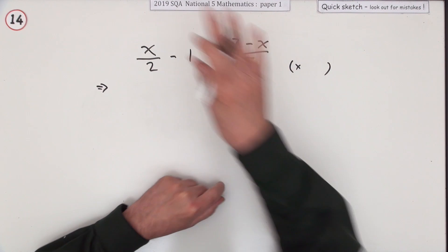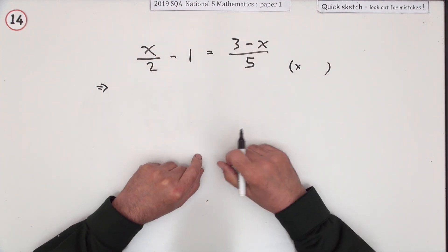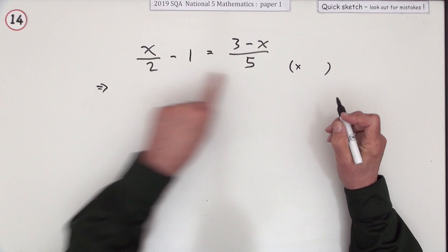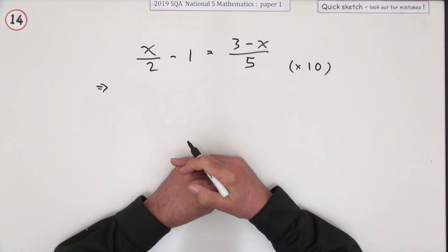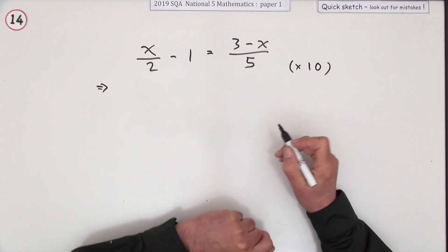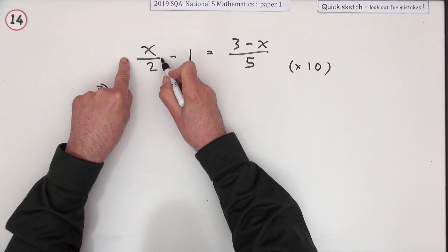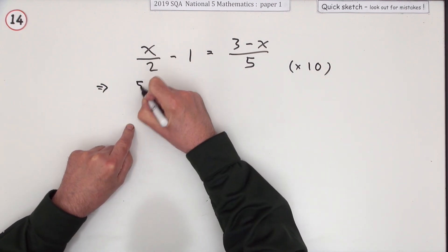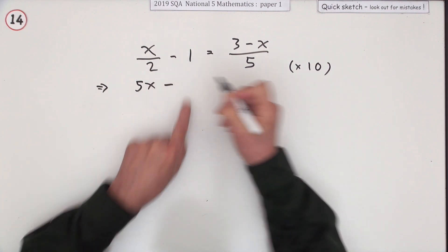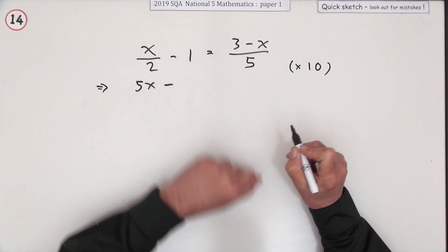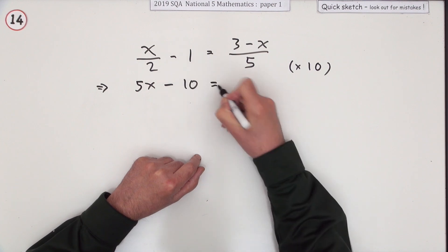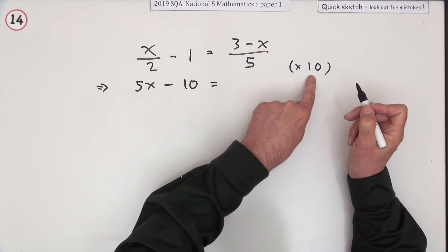Don't just try to say I'll do two times that and five times that, cross multiplying, because of this extra term. If there were only two terms you could do that, but not when there's three terms. Well, two and five both divide into ten, so ten times everything. Ten times this, divide by the bottom, two into ten goes five, five times the top, five x.